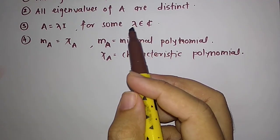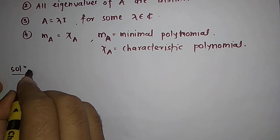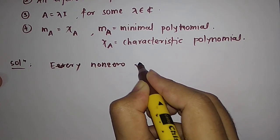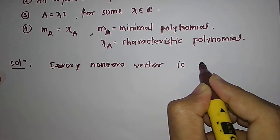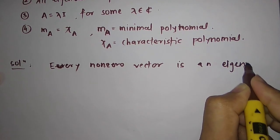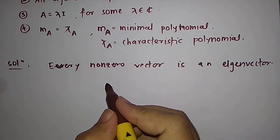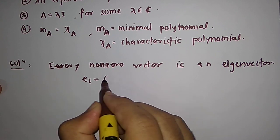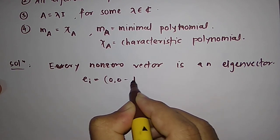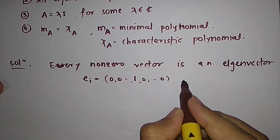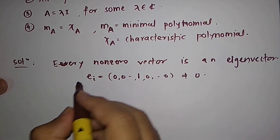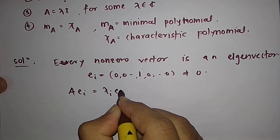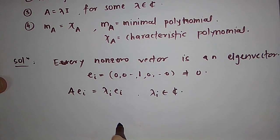So they are saying that every non-zero vector is an eigenvector. So what does that mean? In particular, if we have this standard unit vectors, which are 0, 0, 0 and 1 at the ith position, again 0, 0. So these are also eigenvectors because these are non-zero vectors, right?